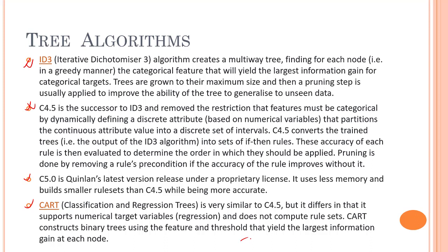CART is very similar to C4.5, except that it supports numerical target values — meaning it handles regression tasks well. C4.5 does not handle numerical values as effectively. ID3 and C4.5 do not support regression at all. CART constructs binary trees — at most two child nodes per node — using the feature and threshold that yield the largest information gain at each node.